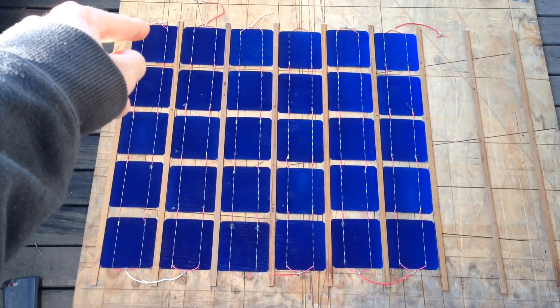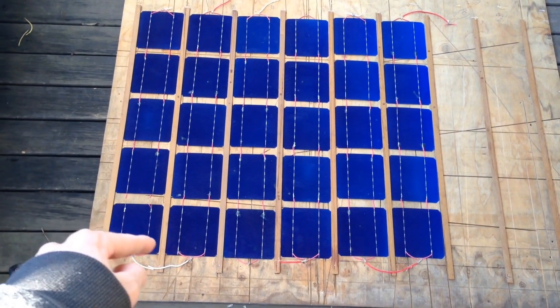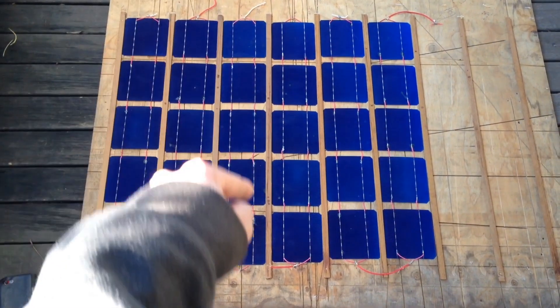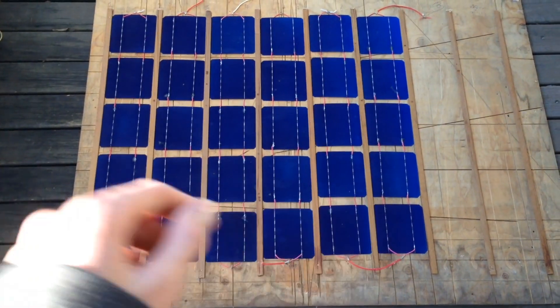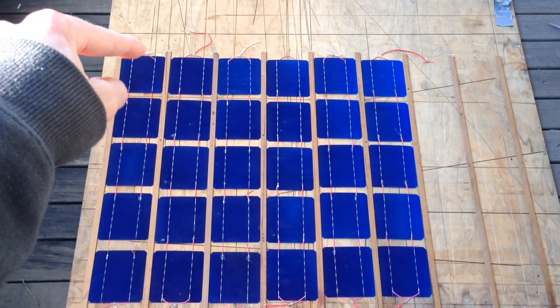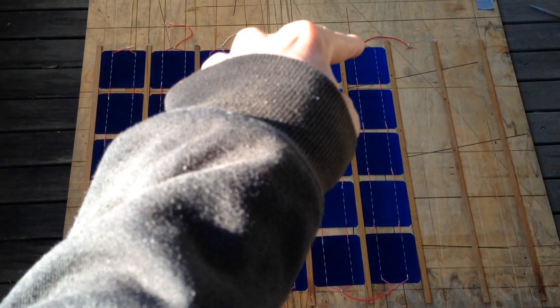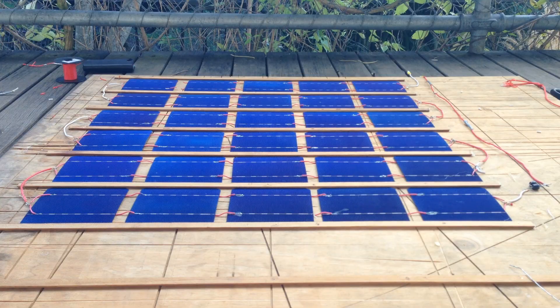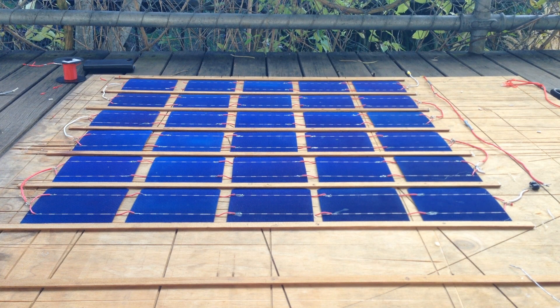I've got them going so that the voltage increases as we go down, and then back up, and then down and up, and down and up. So I should be able to start off with the negative end there, and the positive end right over here. Alright, I'll start soldering.